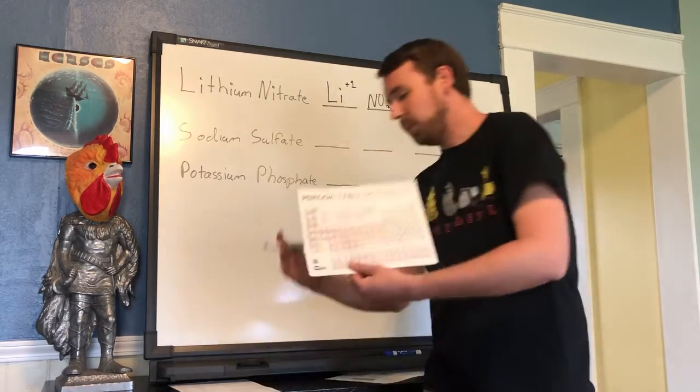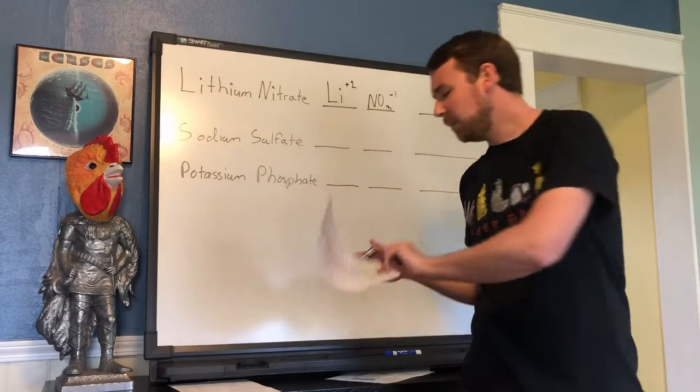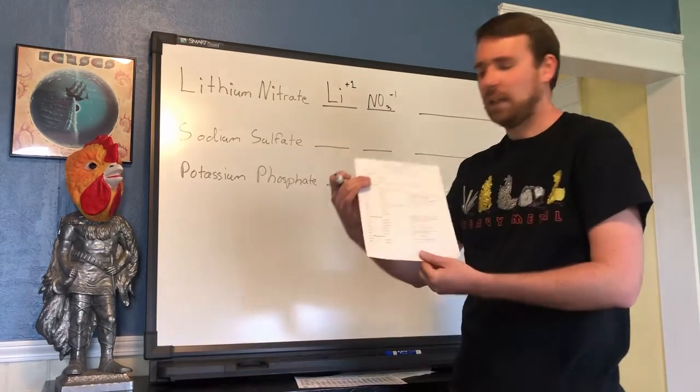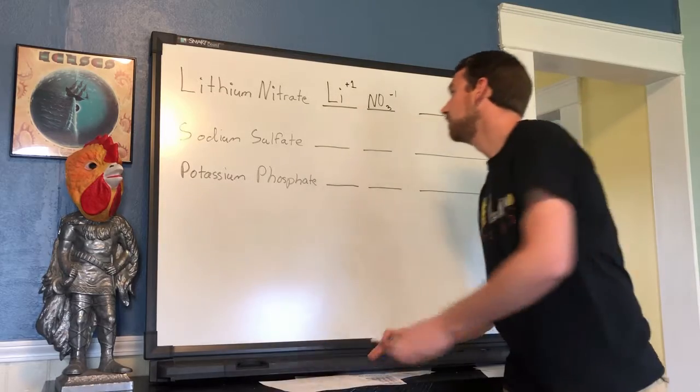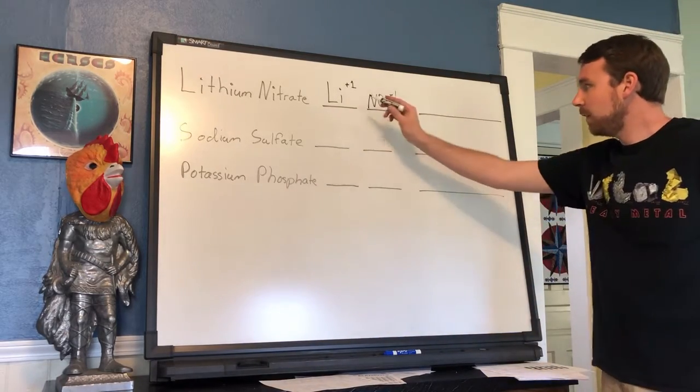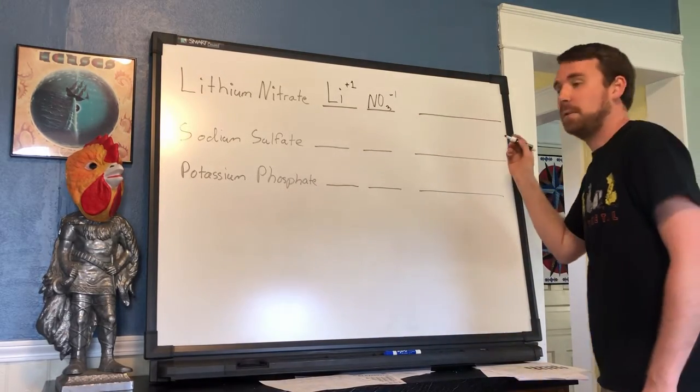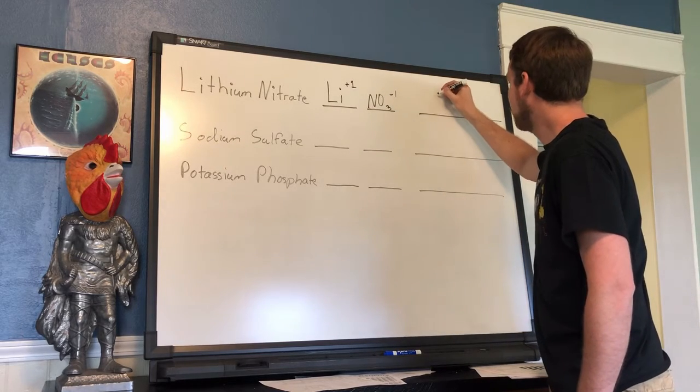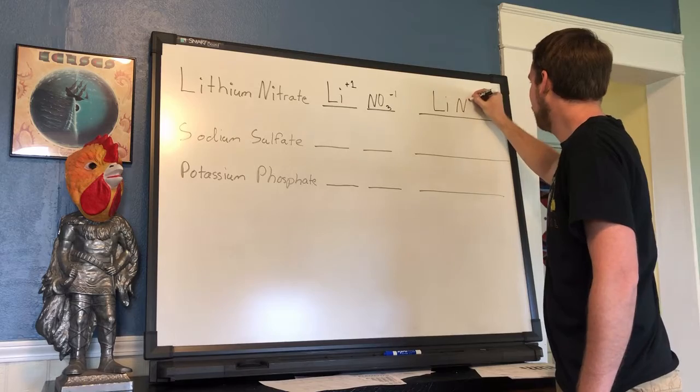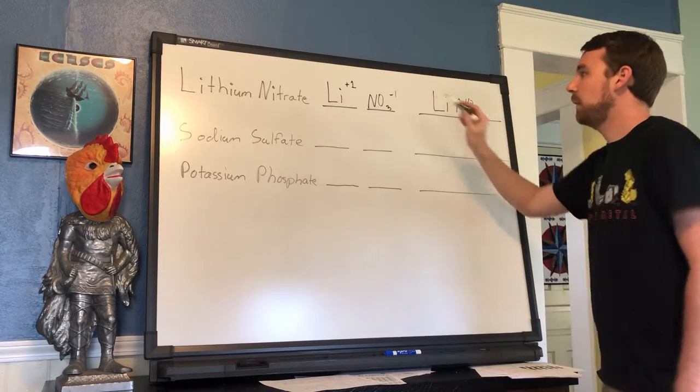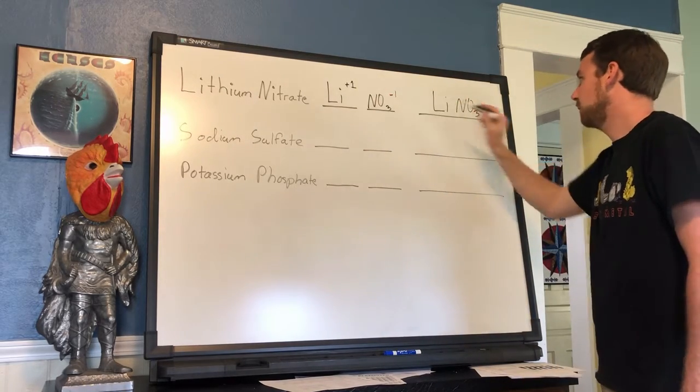You may want to make sure you have your periodic table and your common polyatomic ion sheet available to do this. From here we can get our chemical formula which is just going to be LiNO3 because we have a plus one and a minus one ion.